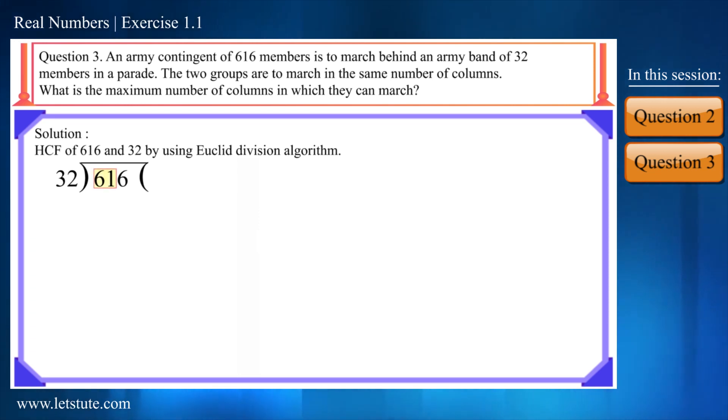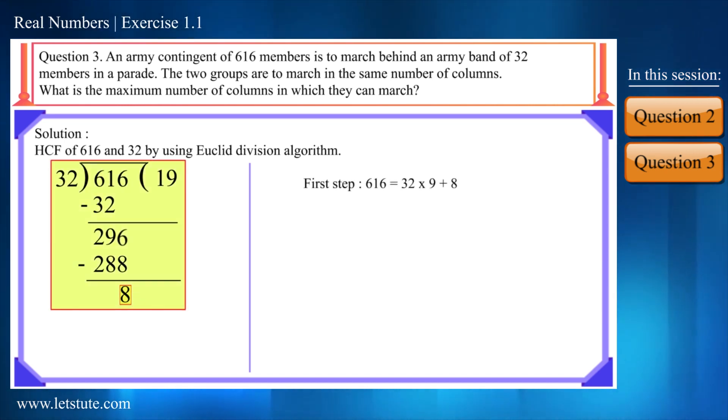Let's take the first two digits and divide it. Here it would be 32 and here it will be 1. On subtracting we get 29. We can write this 6 here. On further division here 288 and here 9 will come. Now by subtracting we will get 8. It is smaller than 32. Here our first step is completed.